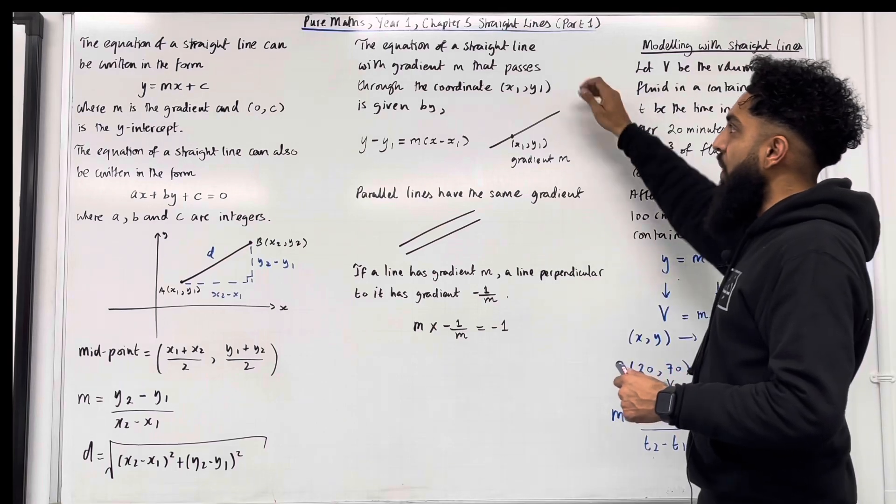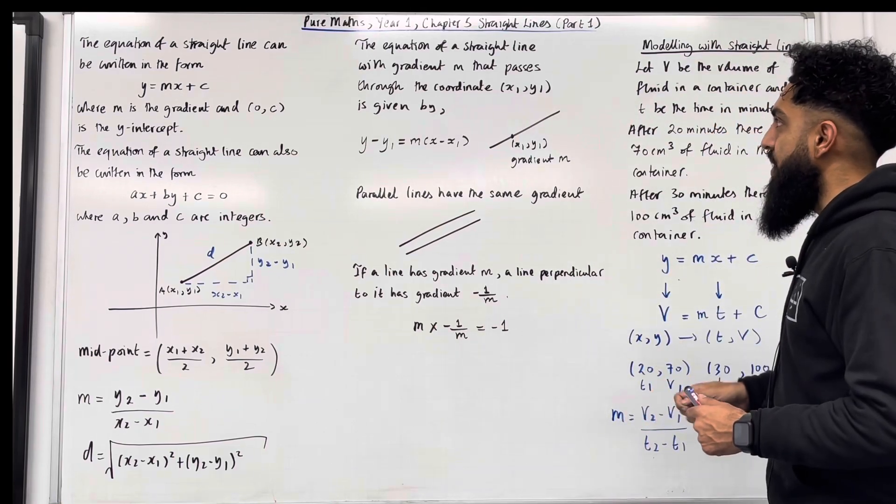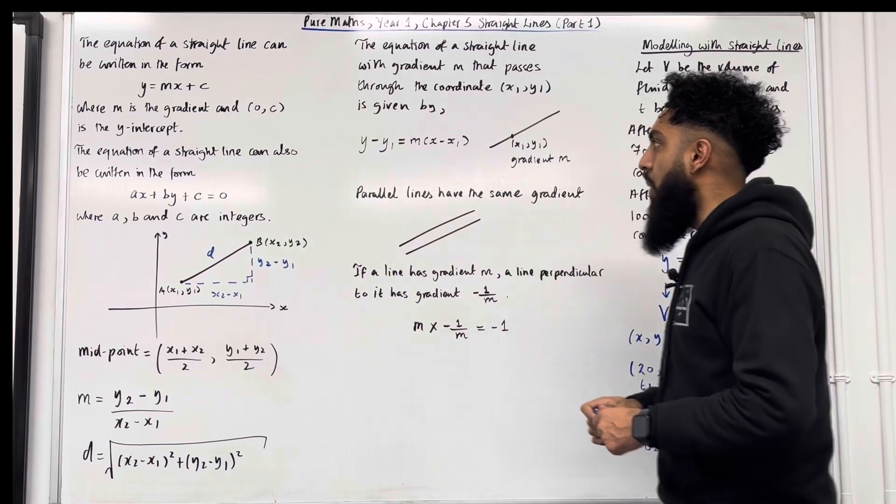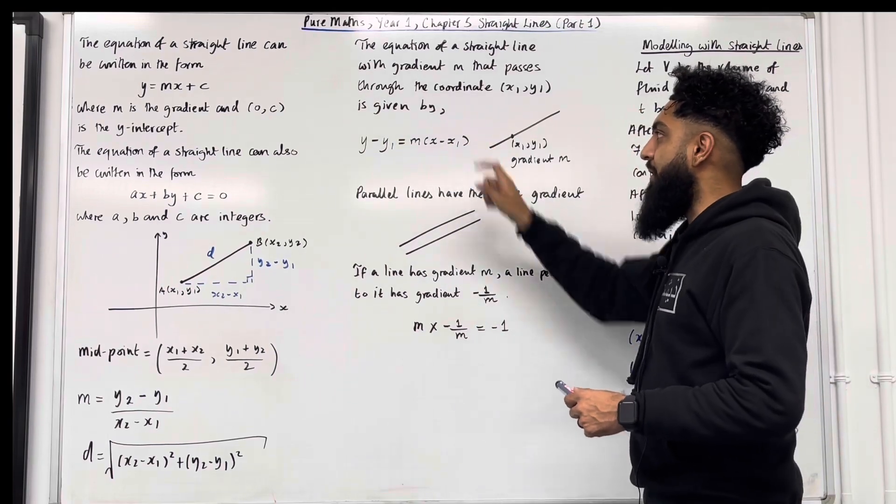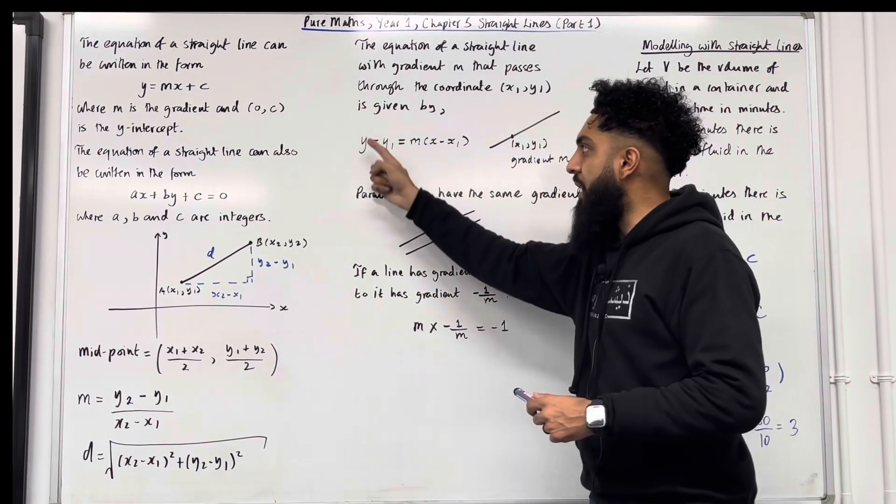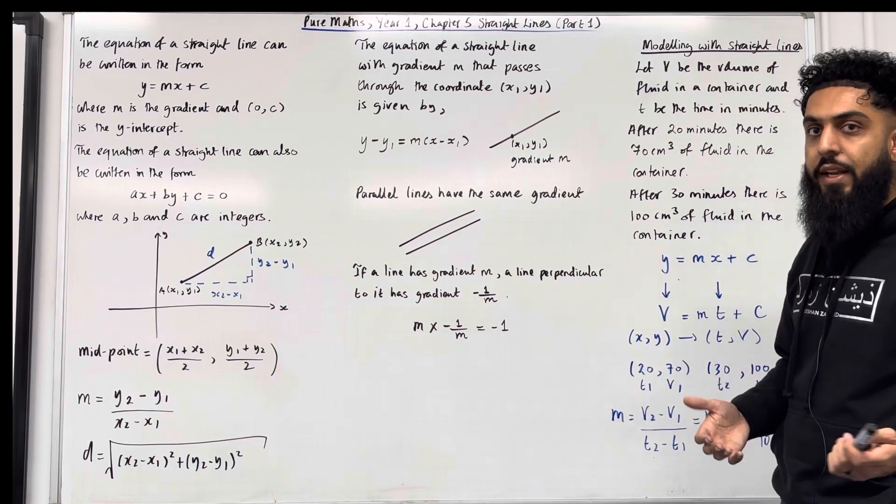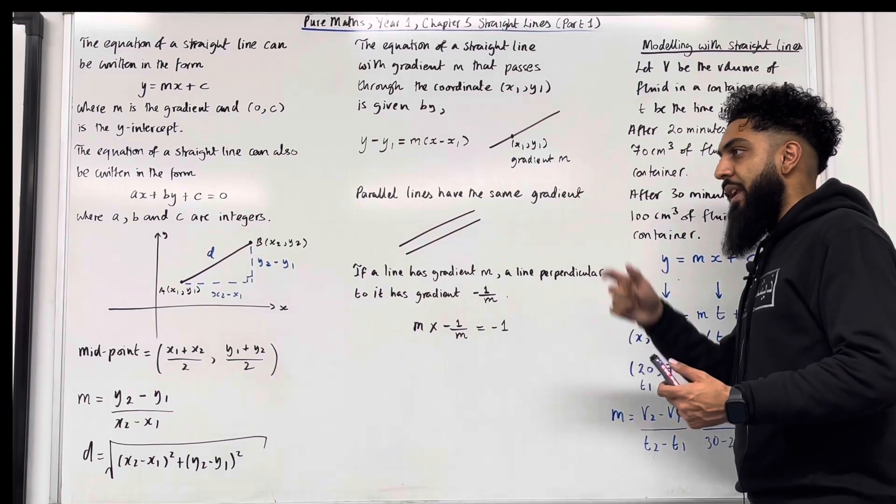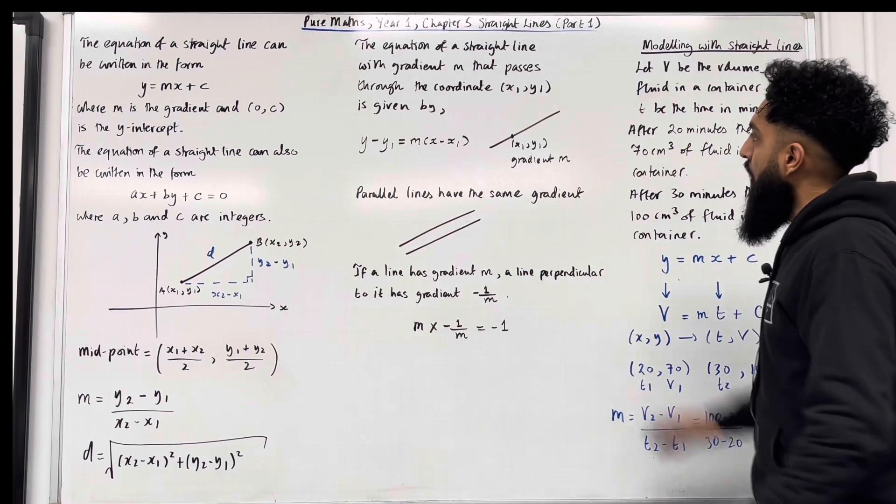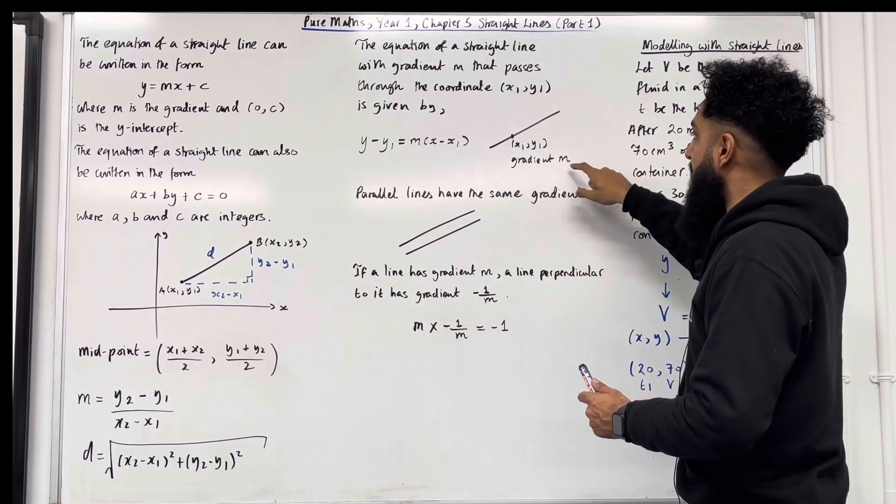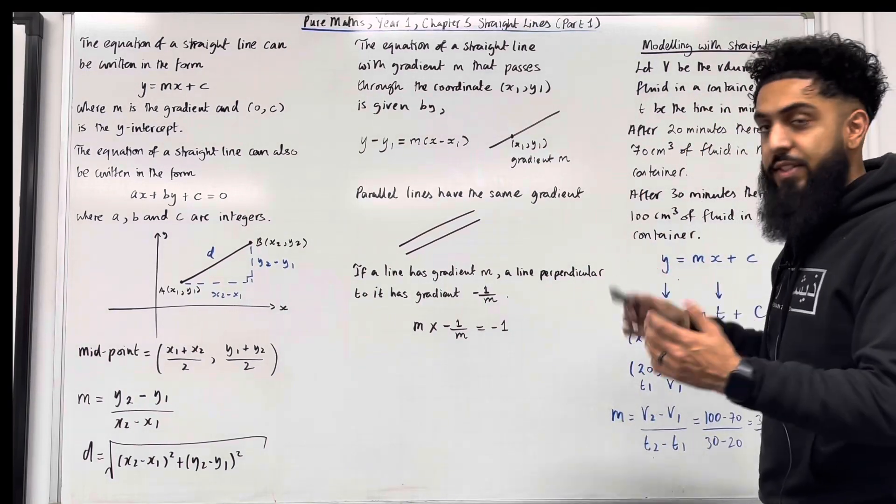The equation of a straight line with gradient m that passes through the coordinate x1, y1 is given by y minus y1 equals m in bracket x minus x1. This is a very important formula that helps you find the equation of a straight line given the gradient and the coordinate that the straight line passes through. So here is the straight line, it passes through x1, y1 and the gradient is m.